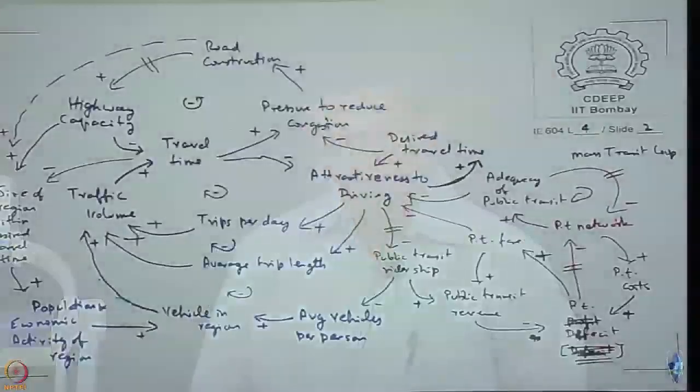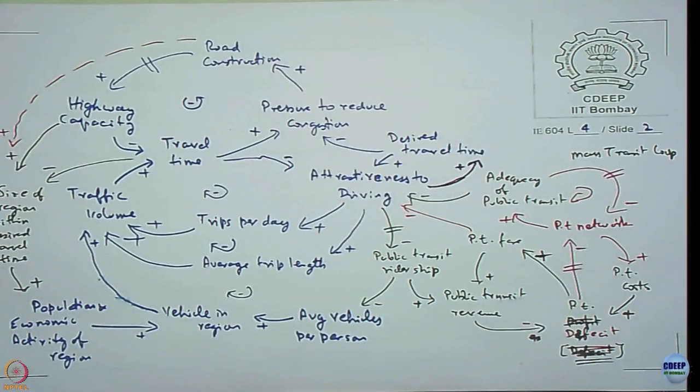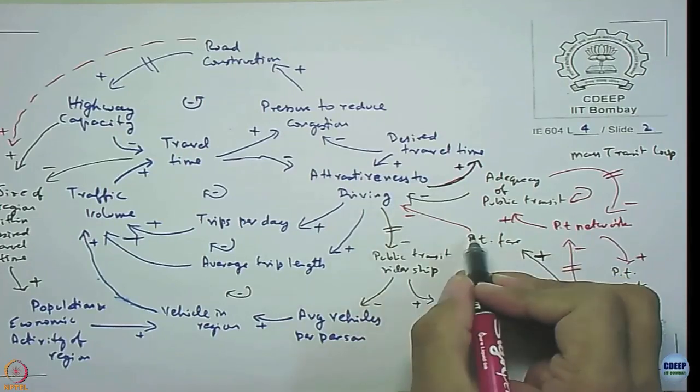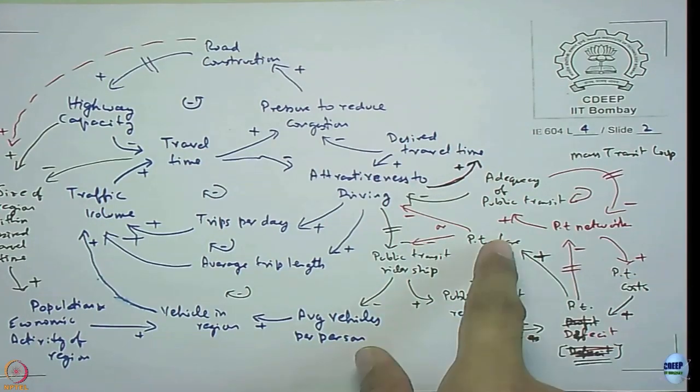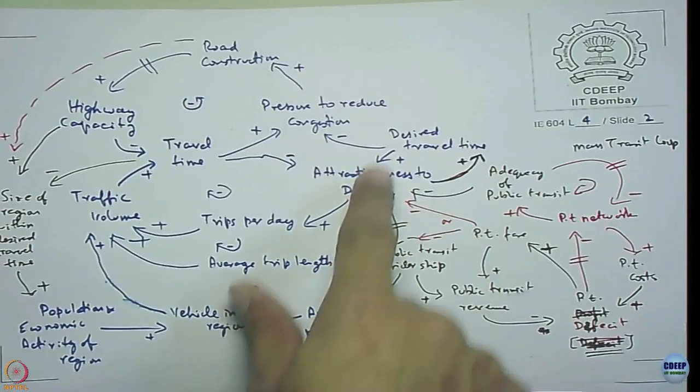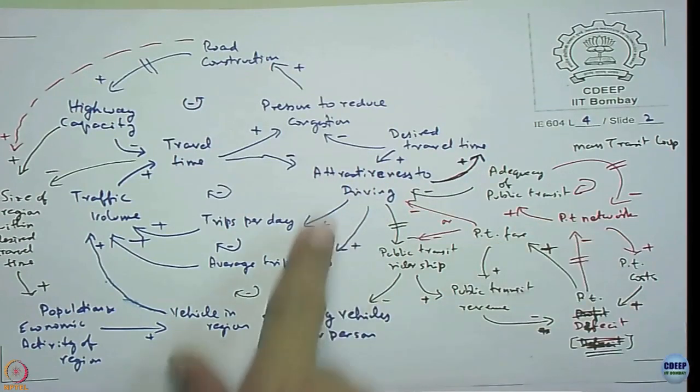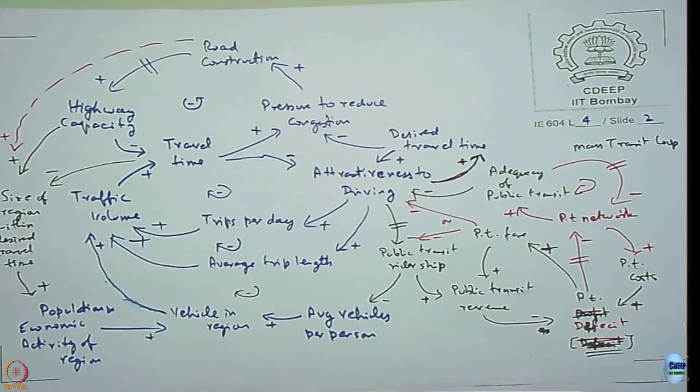I can do actually one more connection. This public transit fare also affects the driving. As fare is more, driving comes down. I can complete the loop there. I am putting it indirectly through attractiveness of driving. That is why public transit fare increases, attractiveness of driving falls down. Or fare comes down, attractiveness of driving increases. Fare is higher, attractiveness of driving is higher.